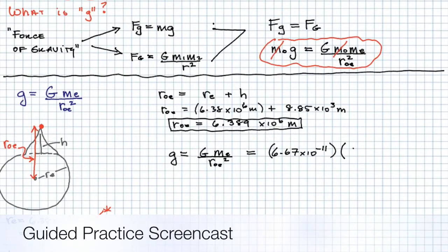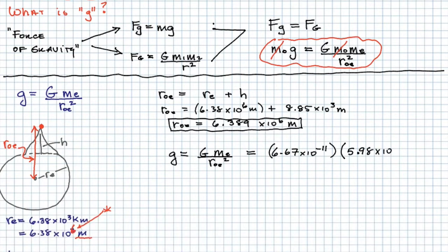And the mass of the earth is 5.98 times 10 to the 24th kilograms, divided by 6.389 times 10 to the 6th meters. And don't forget to square that. I'll just make a little note here. Look it up.